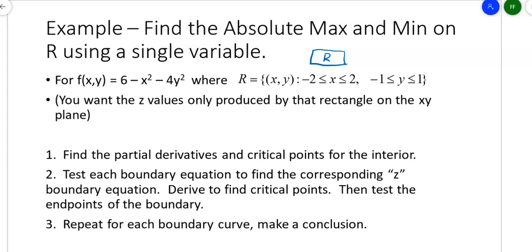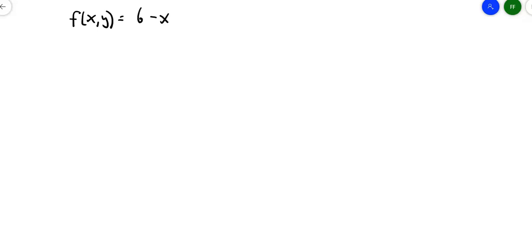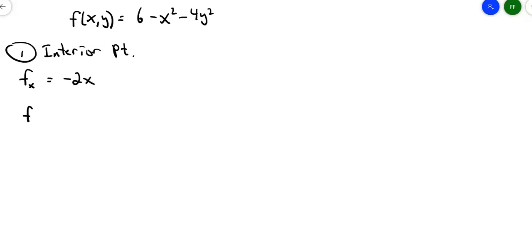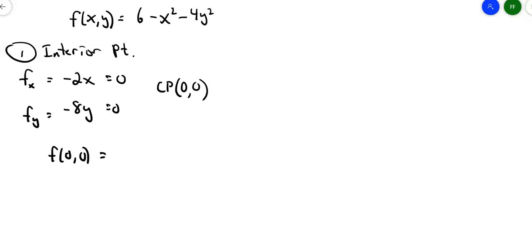The first step is to find the partial derivatives and critical points for the interior. I'm going to be looking for the highest point on the inside and then the highest point on the outside—and at the same time, the lowest point on the inside and outside. The original function is f(x,y) = 6 − x² − 4y². The partial with respect to x is −2x; the partial with respect to y is −8y. Set each equal to 0, and you get a critical point at (0, 0). So f(0, 0) = 6 − 0 − 0 = 6.